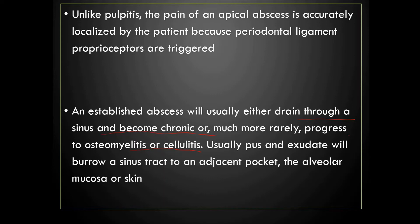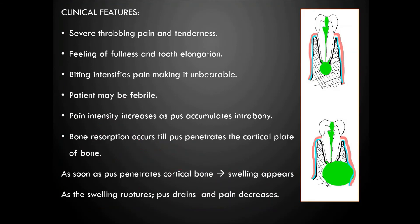An established abscess will usually either drain through a sinus and become a chronic abscess, or sometimes progress into osteomyelitis or cellulitis. If the pus extends along the bone marrow it forms osteomyelitis; if it extends into soft tissue spaces it forms cellulitis. Usually the pus and exudate will burrow a sinus tract to an adjacent pocket, the alveolar mucosa, or skin.